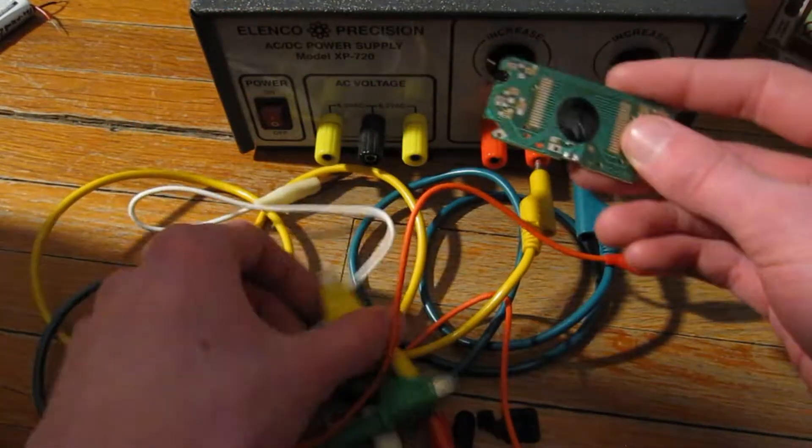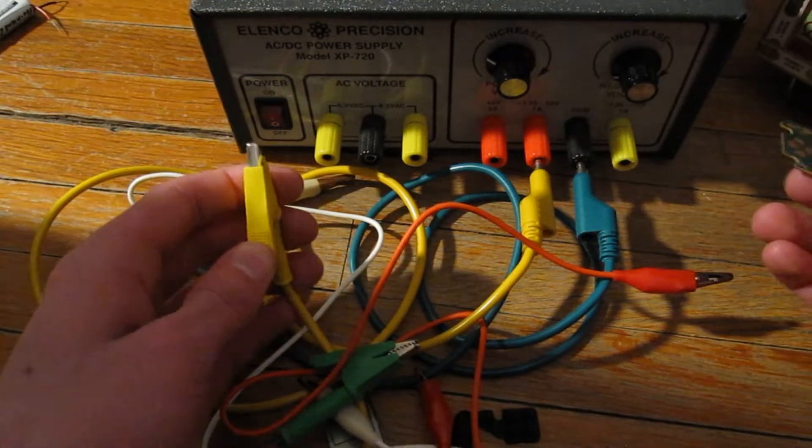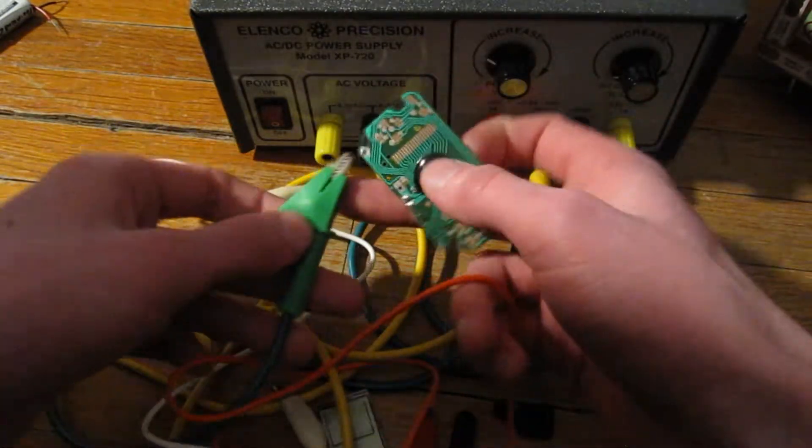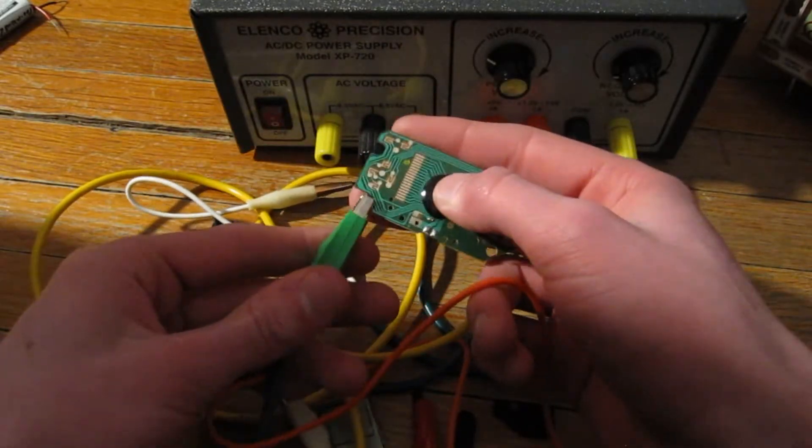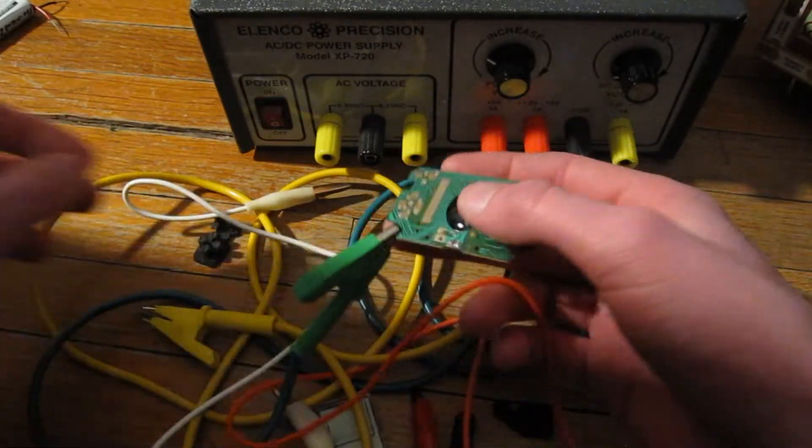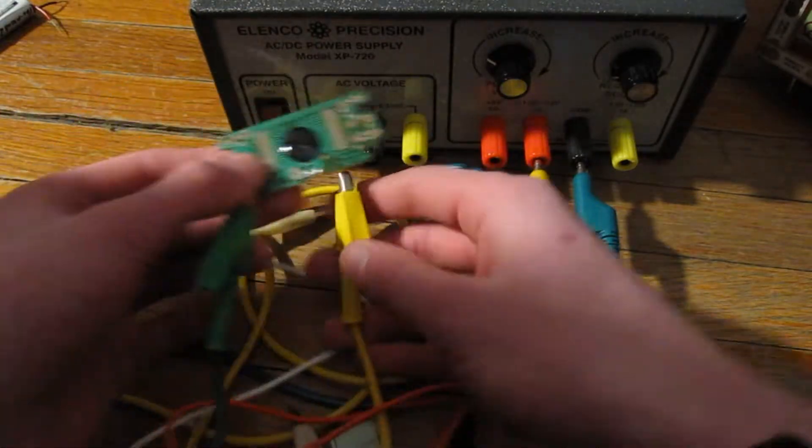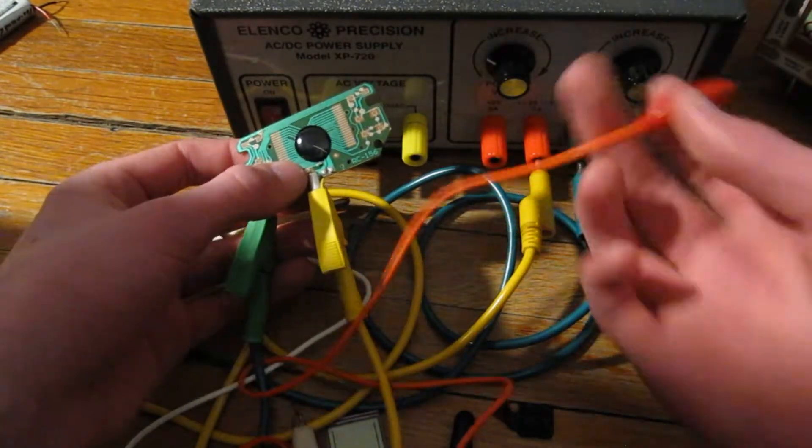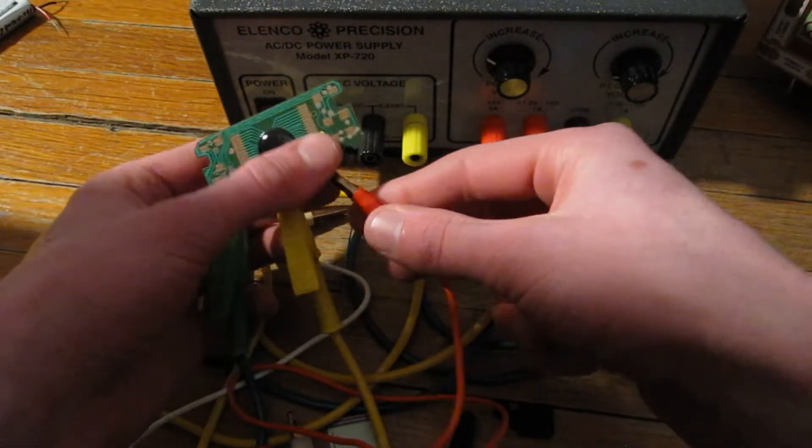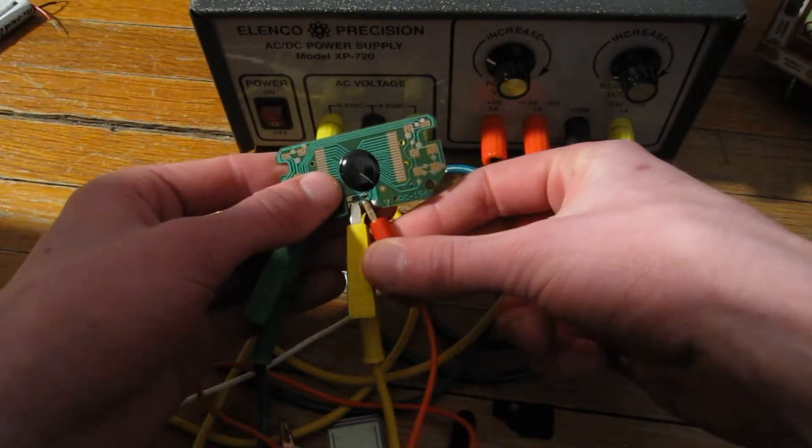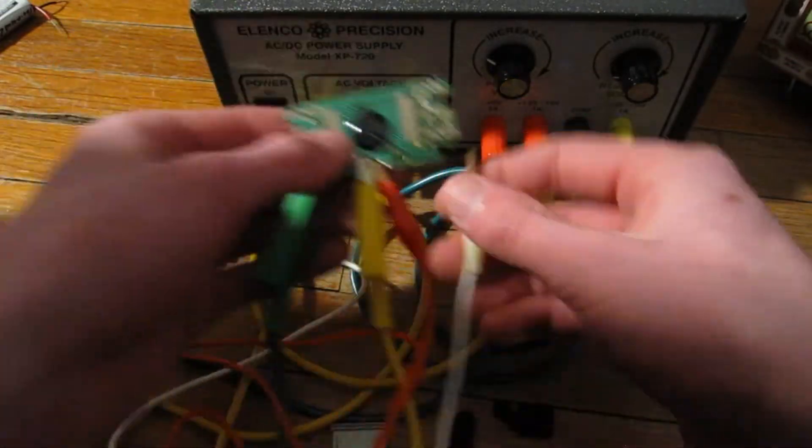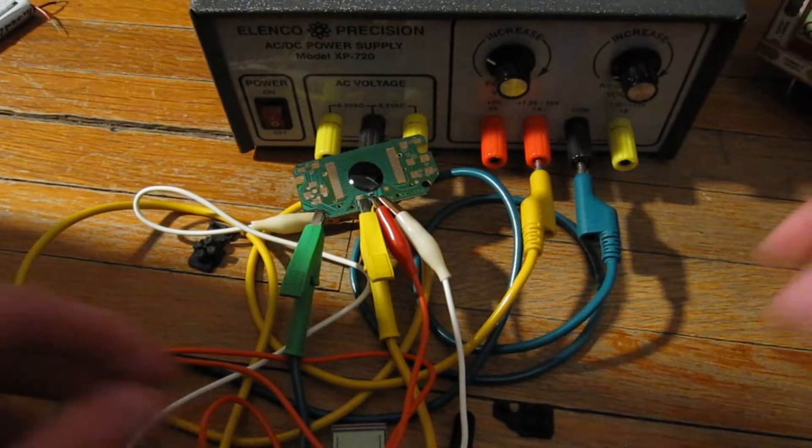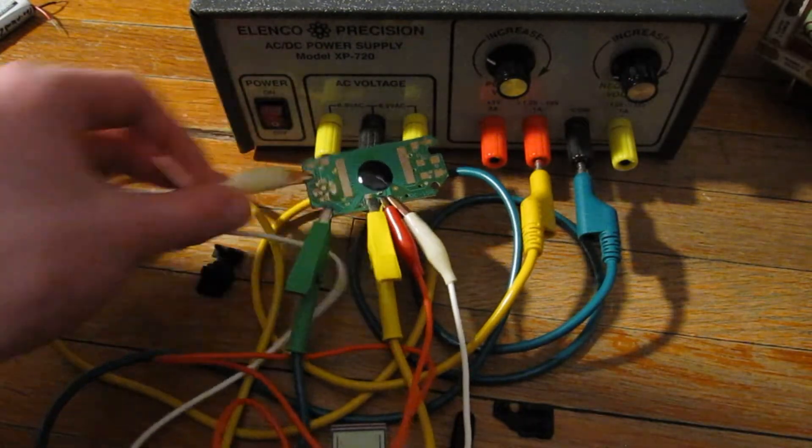So I'm gonna just connect our yellow and green, ground and plus some voltage, not quite sure exactly what I am dialing in. I will connect these up to the speaker contacts and then clip it to this speaker.